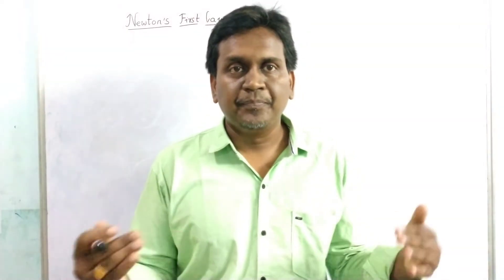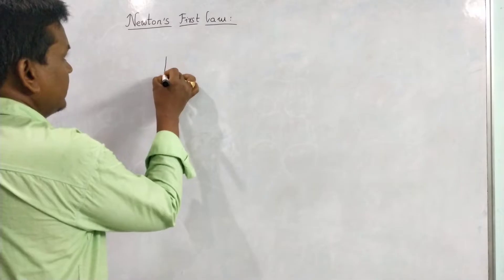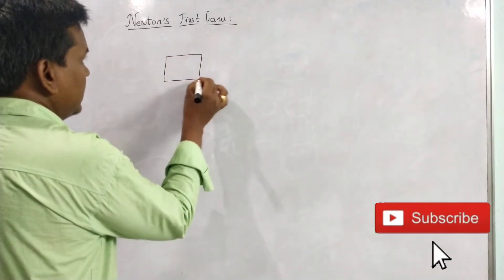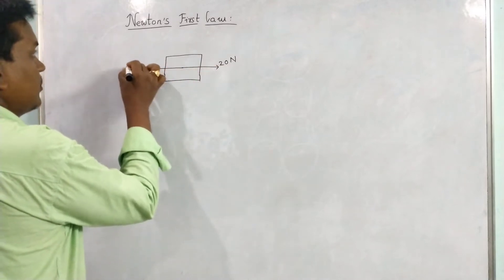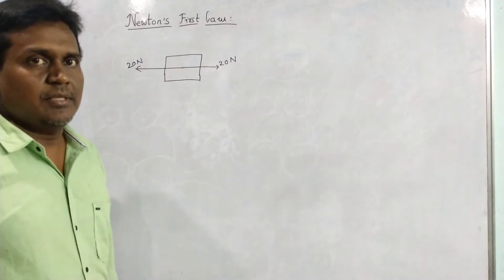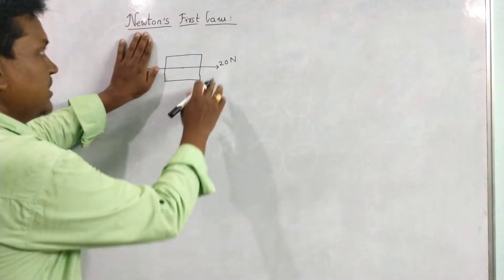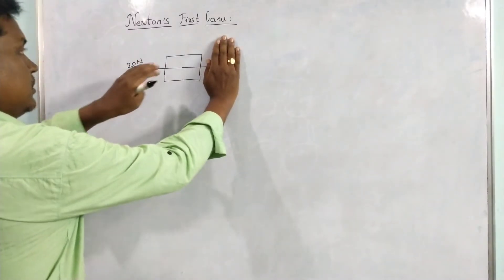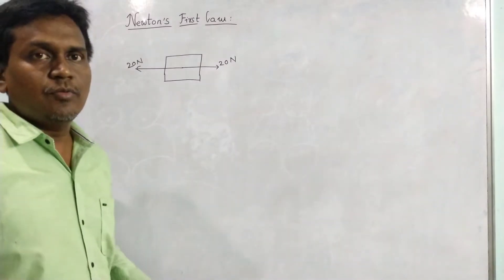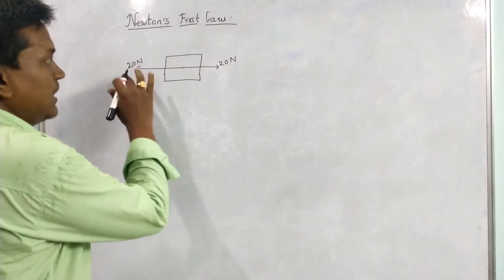If the vector sum of all forces acting on a body is zero, then and only then the body remains unaccelerated. Consider a block on which a 20 newton force is acting in one direction and a 20 newton force is acting in the opposite direction. We call these balanced forces — equal in magnitude and opposite in direction. If only one force acts, the block moves toward that force, but as both forces are equal and opposite, the block remains here itself.